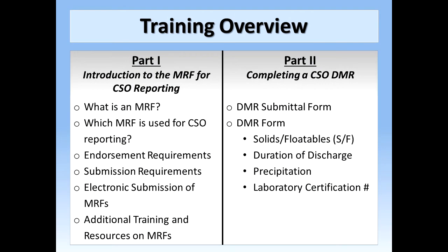This training series is divided into two parts. The first part will provide a brief introduction to the Monitoring Report Forms required for CSO reporting. Topics that we will cover include what an MRF is, which MRF is used for CSO reporting, and the endorsement and submission requirements associated with CSO MRFs. In addition, we will briefly explore the electronic submission process available to NJPDES CSO permittees for submitting their Monitoring Report Forms to the department. We will address the reasons why it is recommended that CSO permittees participate in the process, as well as some specific details regarding the process itself, including the essentials for submitting Monitoring Report Forms electronically.